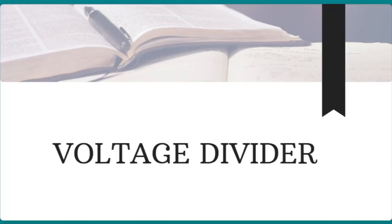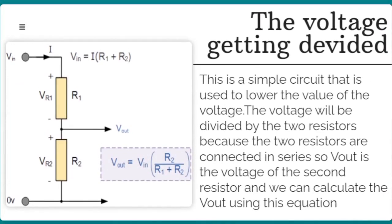In this lecture I'm going to start explaining what is the voltage divider. Basically, the voltage divider is two resistors — these two resistors divide the voltage into two. This is a simple circuit that is used to lower the value of the voltage. The voltage will be divided by two resistors because they are connected in series. V_out is the voltage of the second resistor, and we can calculate V_out using this equation.